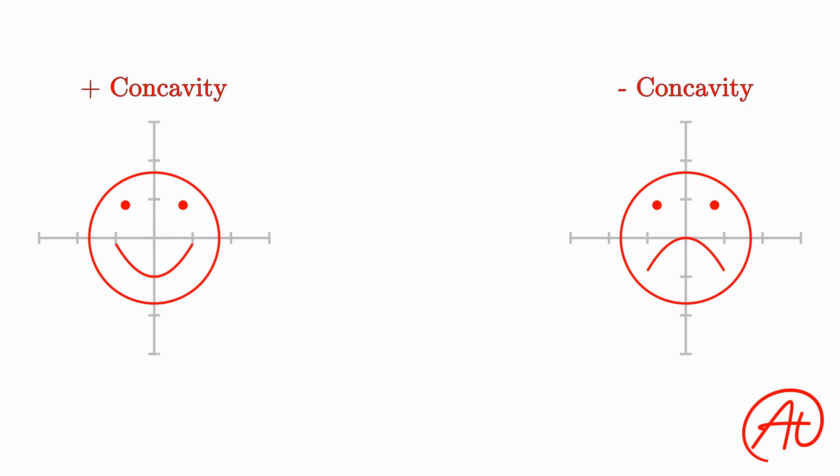So we covered the positive and negative case, but what about a graph with zero concavity? What does that look like? Well, zero concavity implies there is no bend in the graph. So one example could be a line like this.